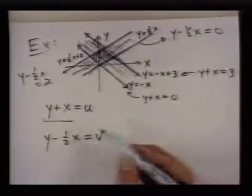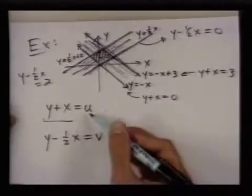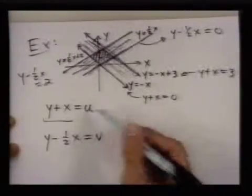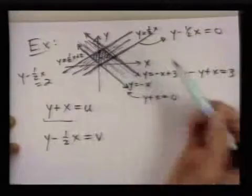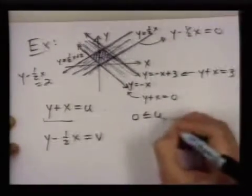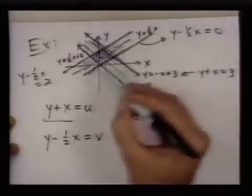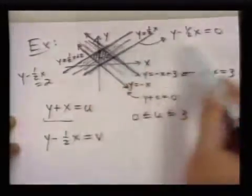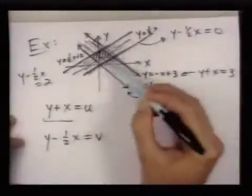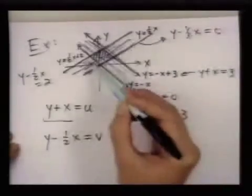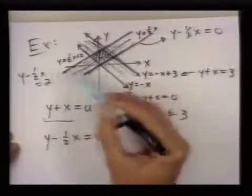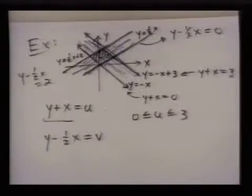But the reason these are nice is because the region is completely described by the fact that u goes from 0 to 3 and v goes from 0 to 2, because we sort of start at this line where y minus 1 half x is 0, and we go up to the line where y minus 1 half x is equal to 2.